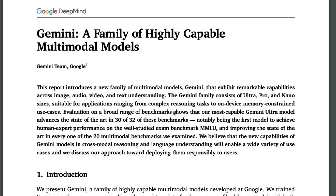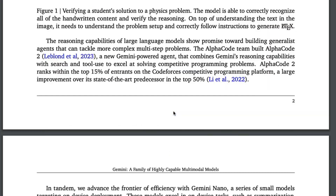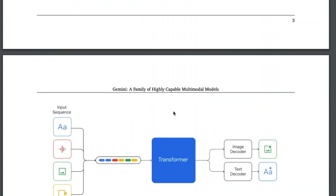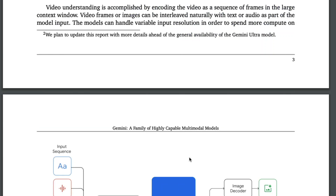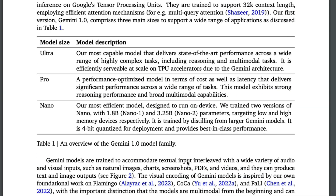First of all, this is a multi-modal model, meaning it has the capability to understand more than just text. The model can take four different modalities of input: text, audio, images, and video. It is still a transformer-based architecture, and it can output responses as interleaved text and images.